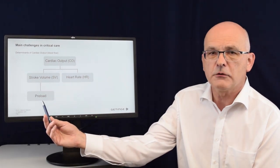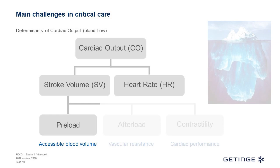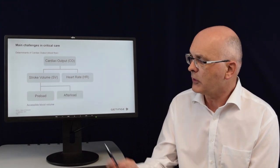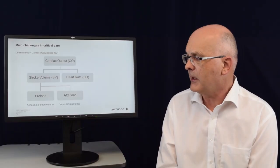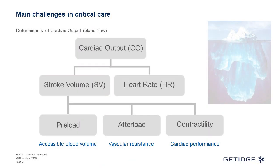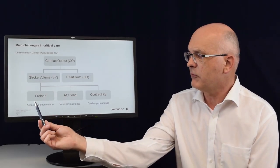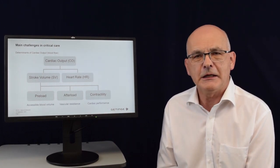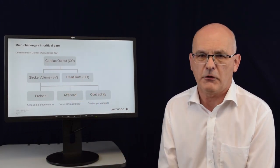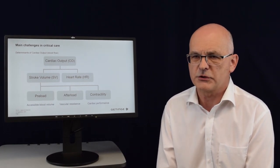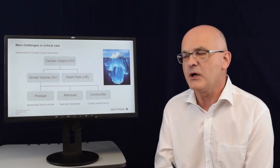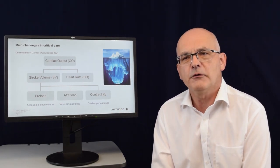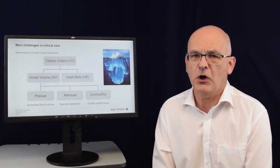One determinant is the so-called preload, which is the accessible blood volume that can be transported. The second is the afterload, which represents the vascular resistance against which the heart has to work. The third is contractility — the cardiac performance, the ability of the heart muscle to contract. Only when we have sufficient information from all these parts can we clearly decide what is the reason for a drop in cardiac output and how to improve the patient's situation. Cardiac output is the tip of the iceberg; to get the full picture we need more details to treat the patient in an optimized way.